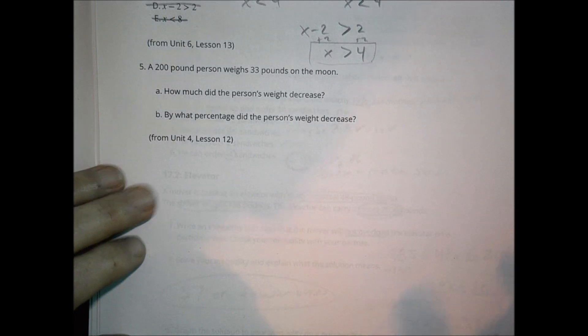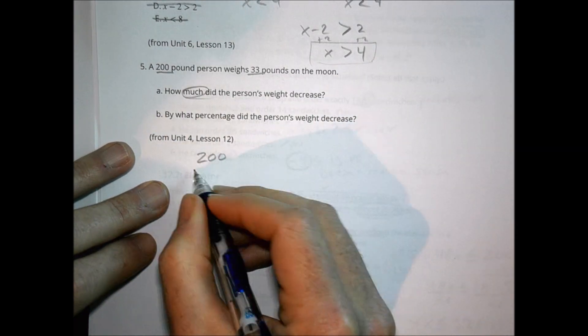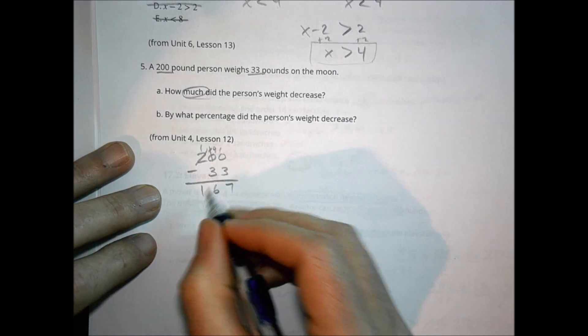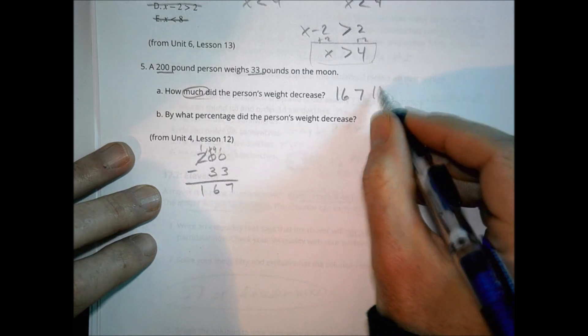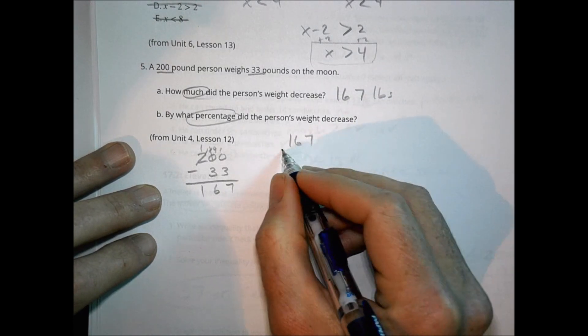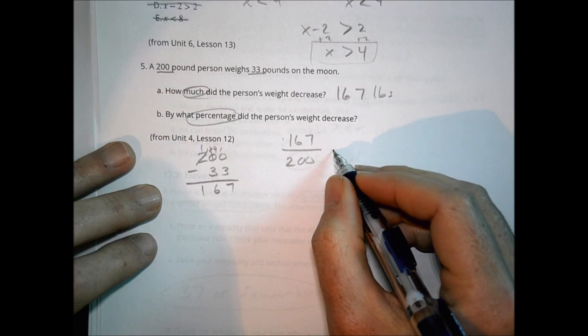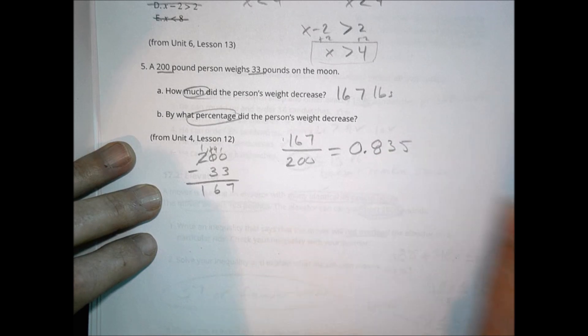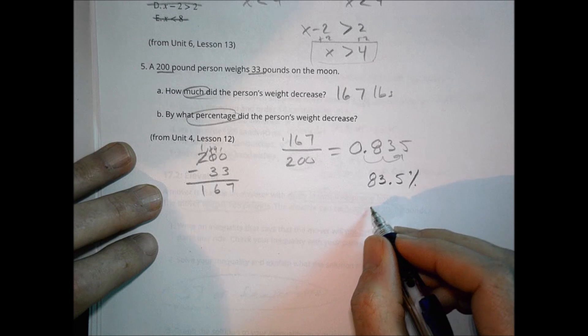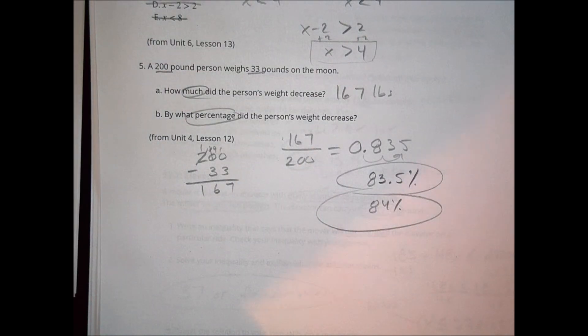And finally, number 5. A 200-pound person weighs 33 pounds on the moon. How much did the weight decrease? We're going to do 200 minus 33 to see what the decrease was. The decrease was 167-pound decrease. By what percentage did the weight decrease? This percentage is going to be the decrease divided by the original. 167 divided by 200 is equal to 0.835. So I want to make that into a percentage. We move it over two spots and we have 83.5%. Or if you wanted to round it up, you could say it's about 84%. Both answers would be okay for me. And that's it for today. We will see you next time.